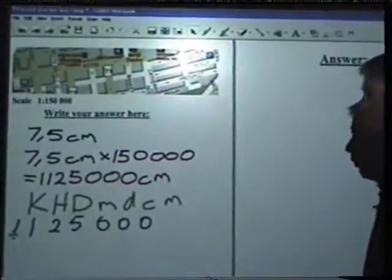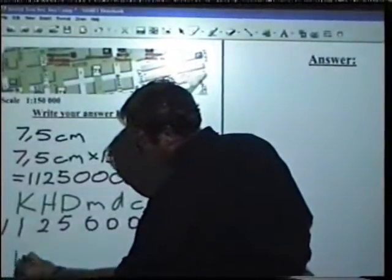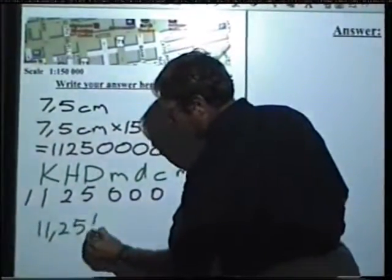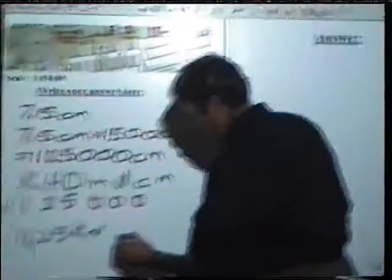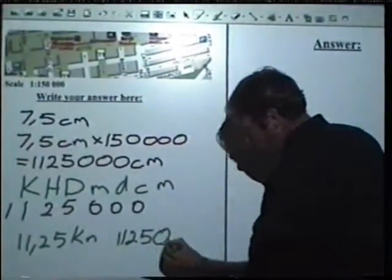And the last step which they can check then is to write the correct answer down which would be 11.25 km or 11,250 m.